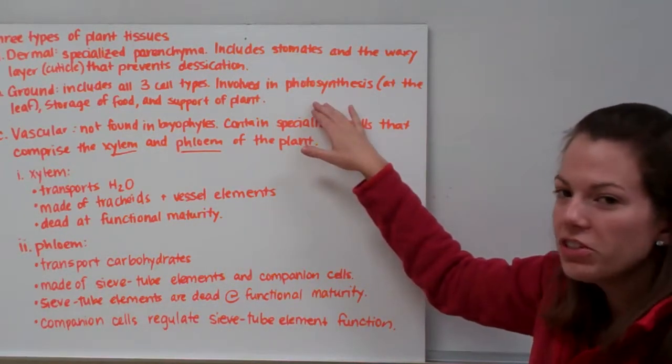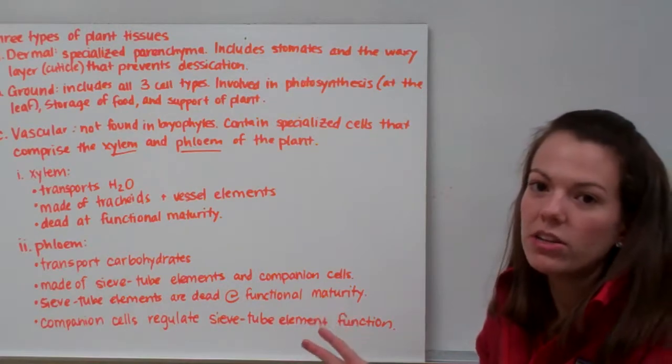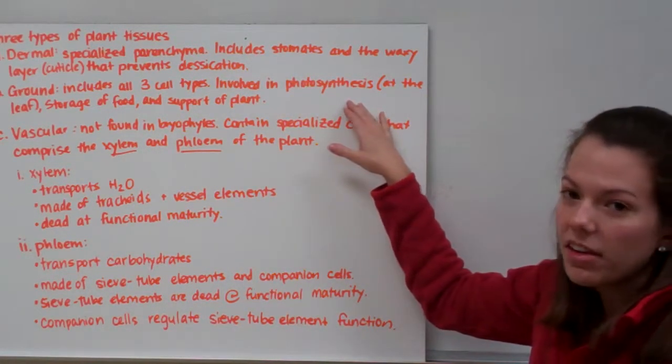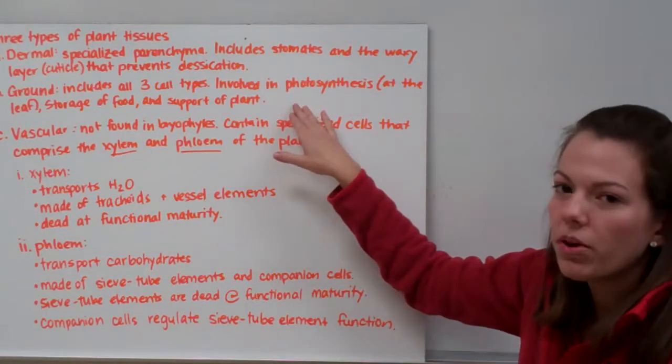Our next type of tissue is ground tissue. And ground tissue includes all three cell types. And it's mostly involved in photosynthesis at the leaf, storage of food, and support of the plant.